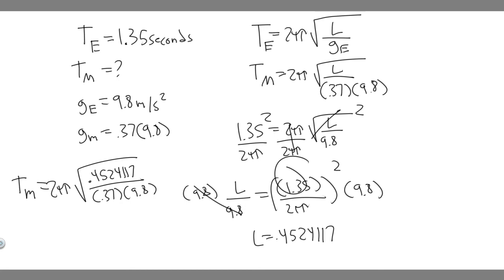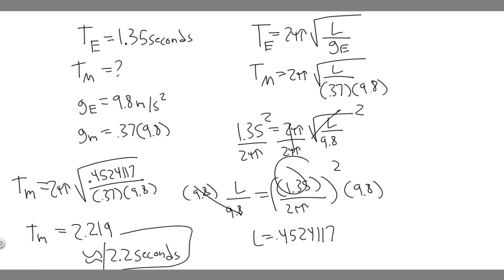When you do that, the period on Mars comes out to 2.219 seconds. Rounding to 2.2 seconds — keep in mind that period is measured in seconds. So 2.2 seconds is the period on Mars, and that's your answer to this question.